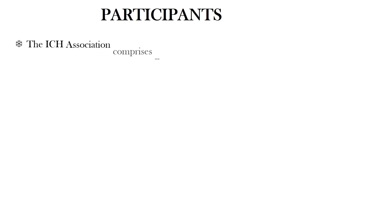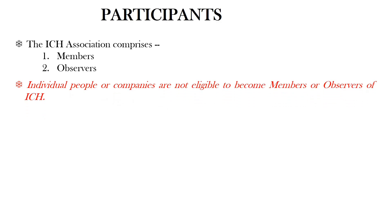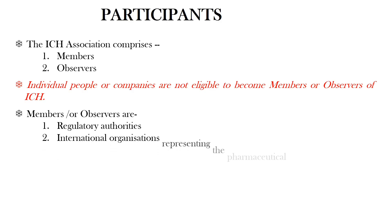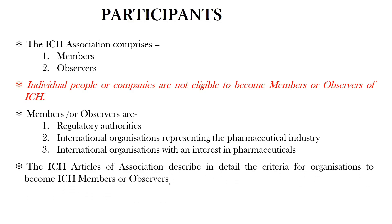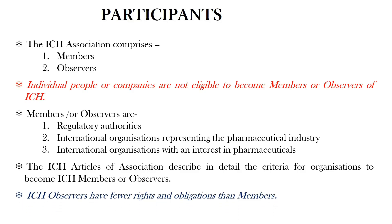Coming to the participants of ICH. The ICH association consists of members and observers. The point to be noted is that individual people or companies are not eligible to become members or observers of ICH. The members or observers of ICH are regulatory authorities, international organizations representing the pharmaceutical industry, and international organizations with an interest in pharmaceuticals. The ICH articles of association describe in detail the criteria for an organization to become an ICH member or observer. ICH observers have fewer rights and obligations than members.